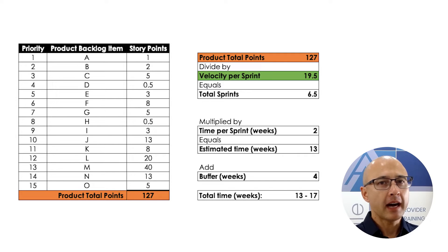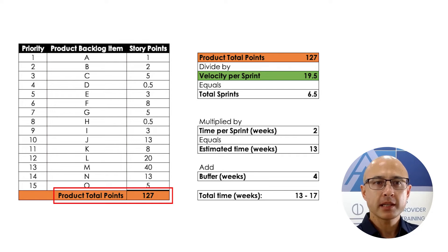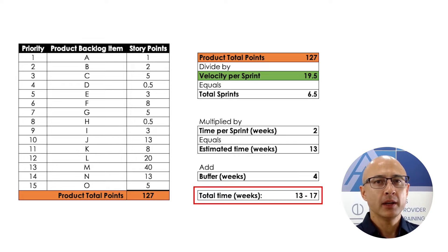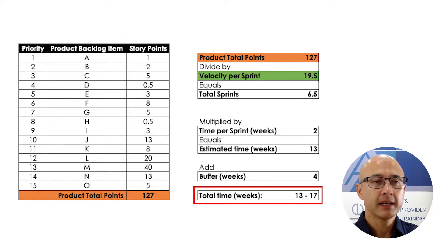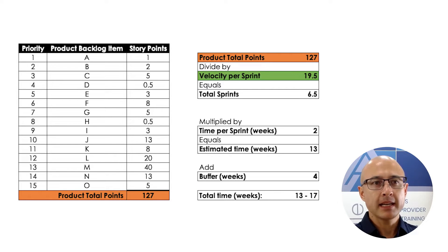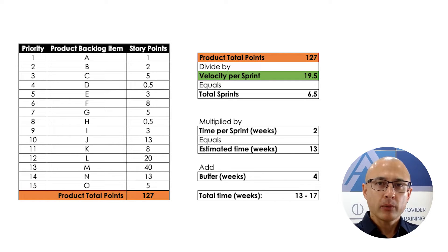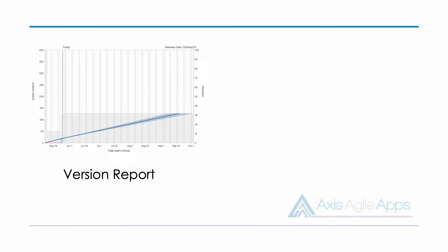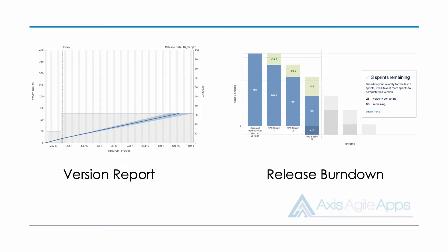In the previous video I gave this example: I had A through to O, a total of 127 points, and it came out to be a forecast of about 13 to 17 weeks based on a velocity of 19.5. So let's imagine my team starts this release and starts delivering these product backlog items — how can we track how they're progressing? Well in Jira we have two reports: the version report and the release burndown report.